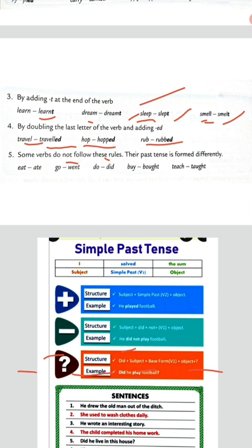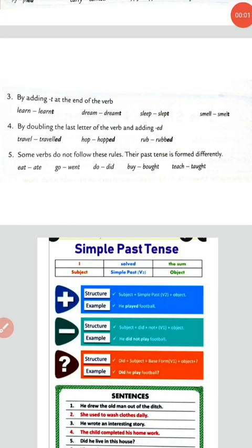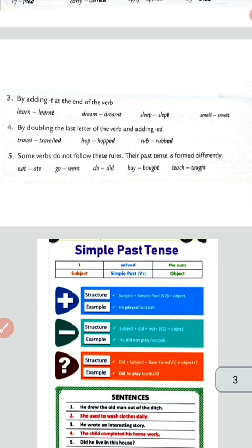Rule five: some verbs do not follow these rules. कुछ verbs होते हैं जो ED और T लगाने का rule नहीं follow करते हैं। So their past tense is formed differently. जैसे eat का ate, go का went, do का did, buy का bought, teach का taught। Like this we have to change them into past tense.